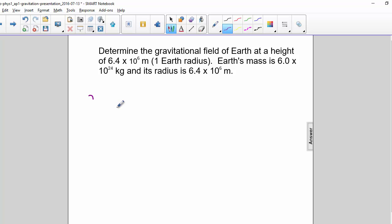We know that g is equal to GM over (r plus h) squared.